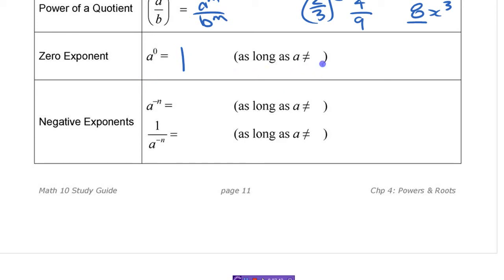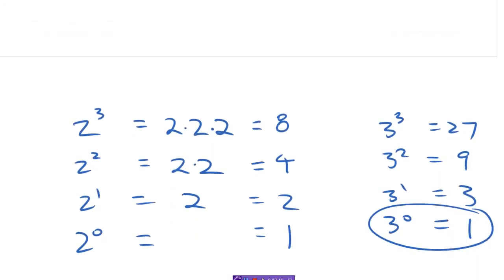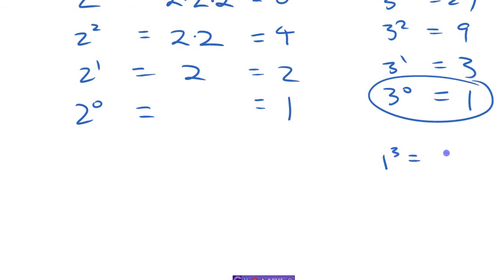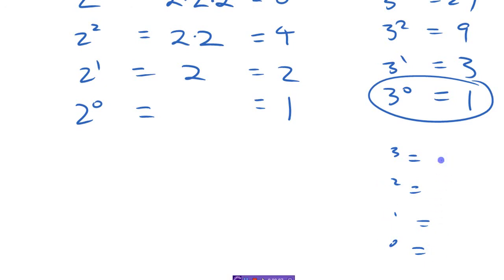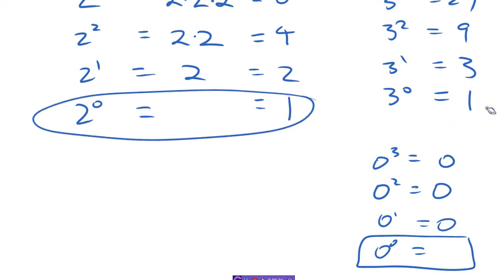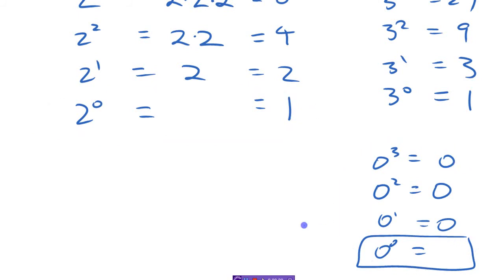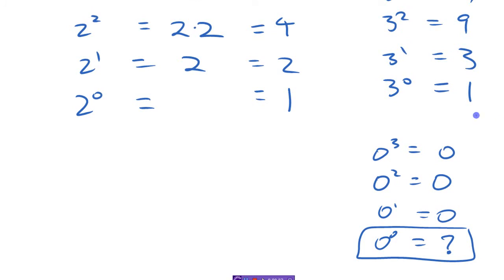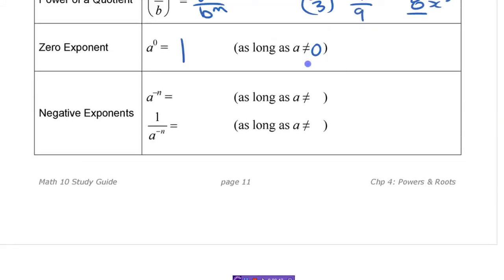So go back up there and note: anything to the 0 power is 1, as long as a is not 0. What would be the only thing that messes that up? 1 to the 0 still equals 1. The only problem is 0: 0 cubed is 0, 0 squared is 0, 0 to the 1 is 0 — but 0 to the 0 looks like it should be 0 from that pattern, yet the rule says 1. So the answer is: 0 to the 0 is undefined, because there are two conflicting rules.